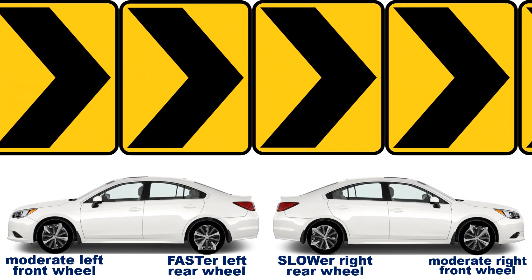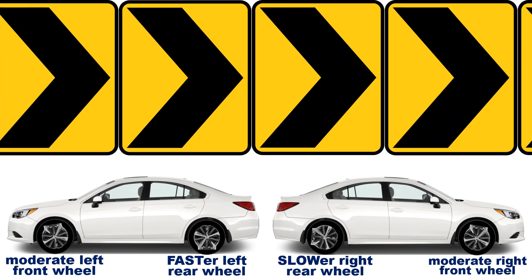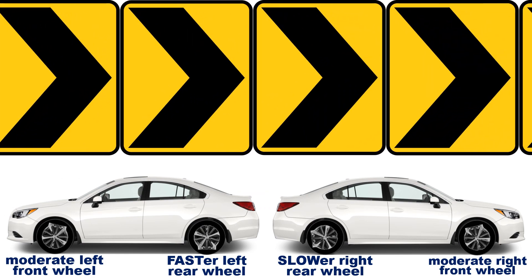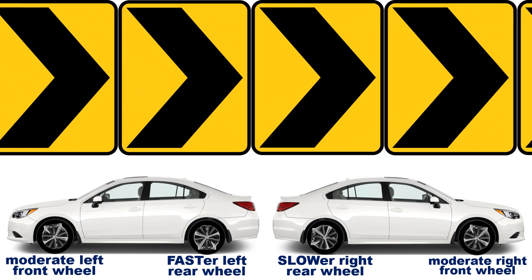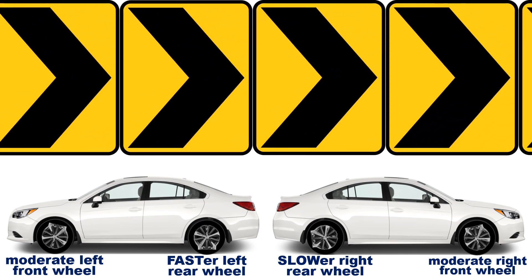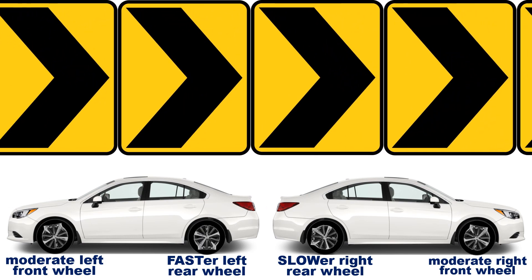When the car turns right, the left rear wheel spins faster than the right rear wheel because the left side is the outer one and the right side is the inner one.